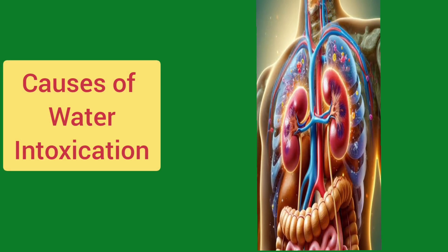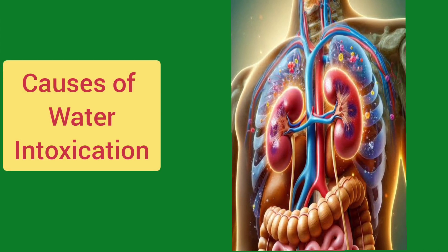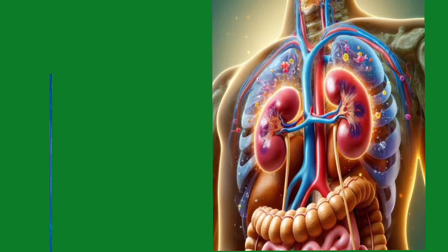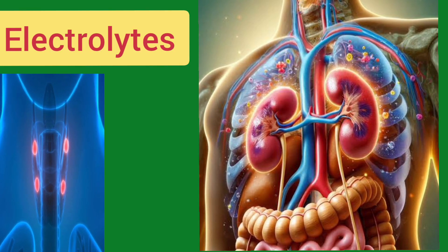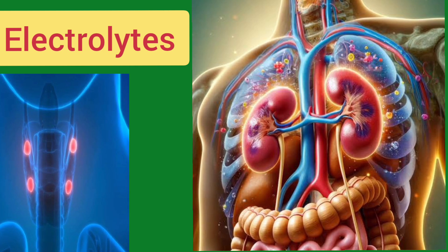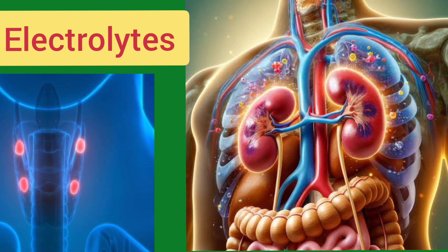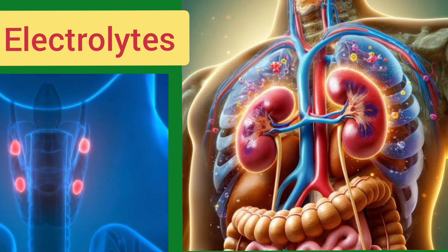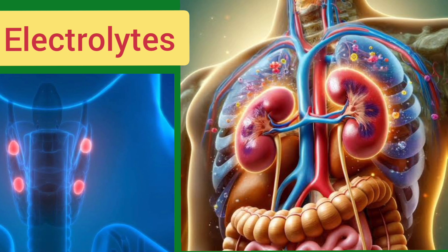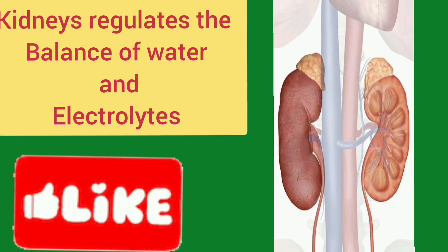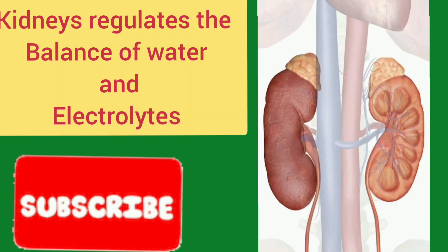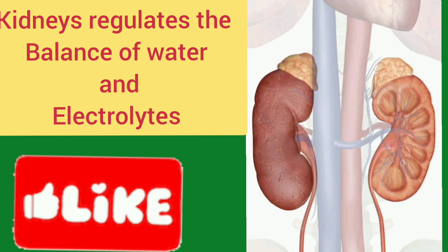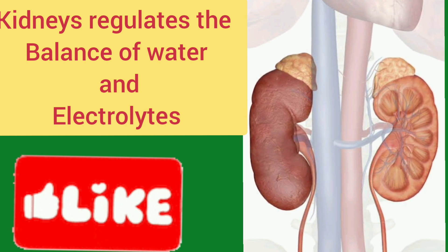Water intoxication happens when you take in more water than your body needs, which negatively impacts the levels of electrolytes — minerals like sodium — in the blood. Electrolytes are important because they help keep the body operating normally, playing a role in the nervous and muscular systems as well as in functions like blood pressure regulation. Typically, the kidneys can regulate the balance of water and electrolytes, but if the kidneys can't naturally get rid of excess fluid fast enough, the body's electrolyte level can become dangerously diluted.